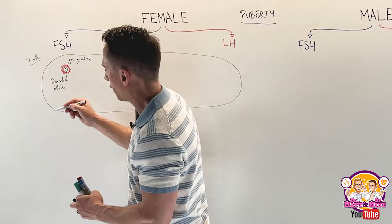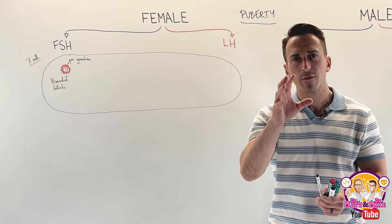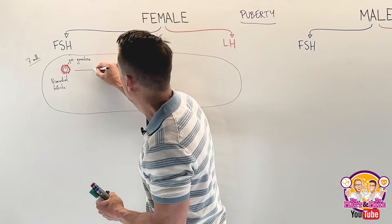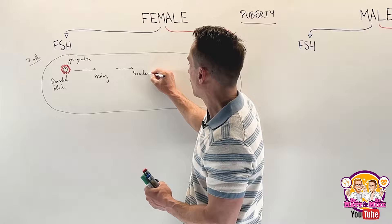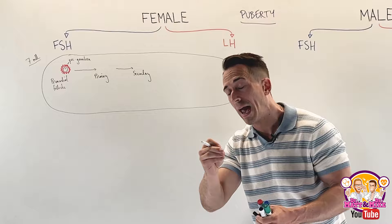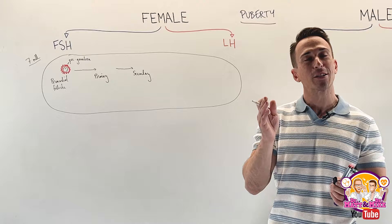There's a process called folliculogenesis in which these follicles develop. The primordial follicle turns into a primary follicle, which turns into a secondary follicle, which can then move on and become a preantral, antral, Graafian, mature, or preovulatory follicle. There are many names for this end-stage follicle — we'll get there in a second.